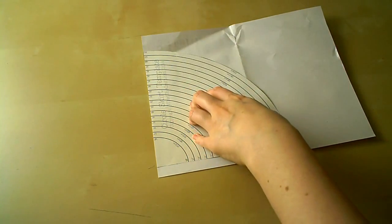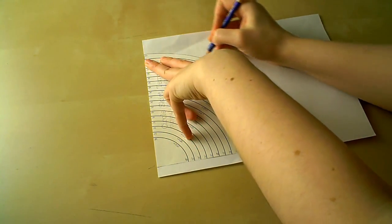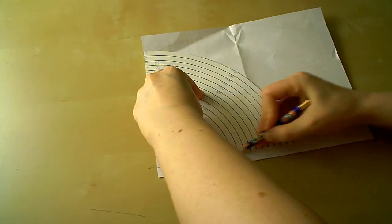Grab one of your scrap pieces of paper and line up the template with one edge of the paper. Leave about half an inch from the edge of the other side. Trace around the template.